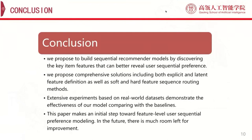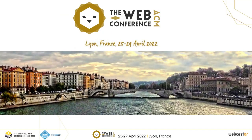So, in this paper we propose to build sequential recommender models by discovering the key item features that can better reveal user sequential preference. And we propose comprehensive solutions including both explicit and latent feature definition as well as soft and hard feature sequence routing methods. Extensive experiments based on real-world datasets demonstrate the effectiveness of our model comparing with baselines. This paper makes an initial step toward feature-level user sequential preference modeling. In the future there is much room left for improvement. That's all. Thank you.